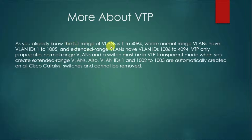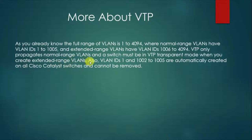The full range of VLANs is 1 to 4094. Normal range VLANs are 1 to 1005 and extended range VLANs are 1006 to 4094. VTP propagates only normal range VLANs. If you are using extended range VLANs, the switch must be in transparent mode — VTP cannot work in server or client mode with extended range VLANs. This is an important point to keep in mind when using VTP.